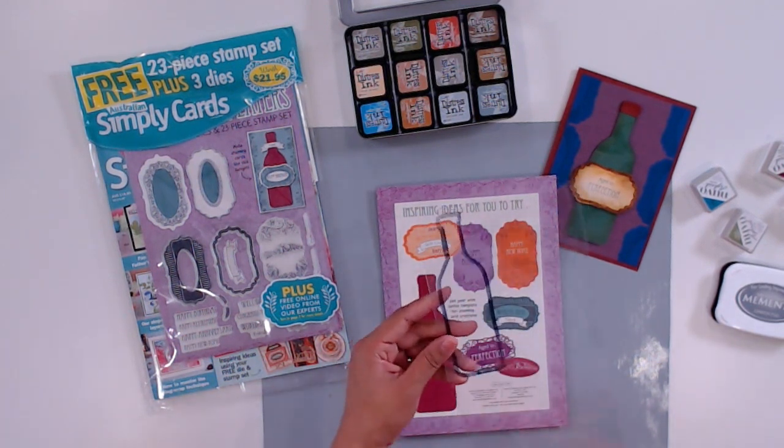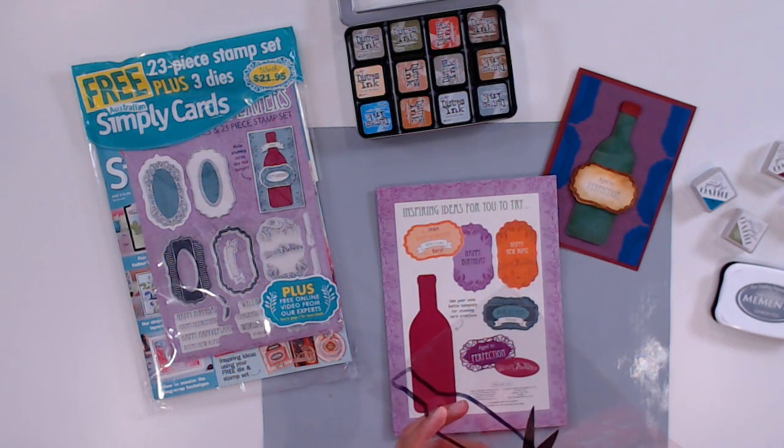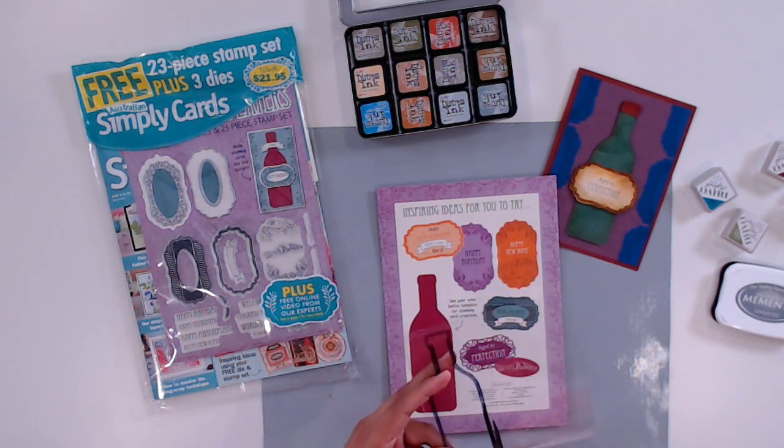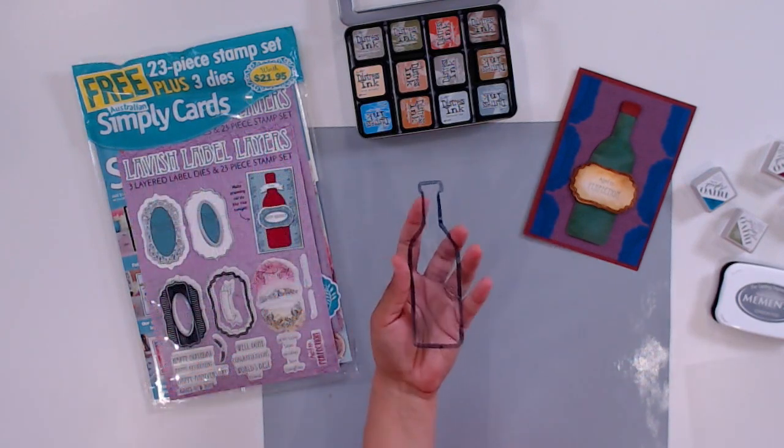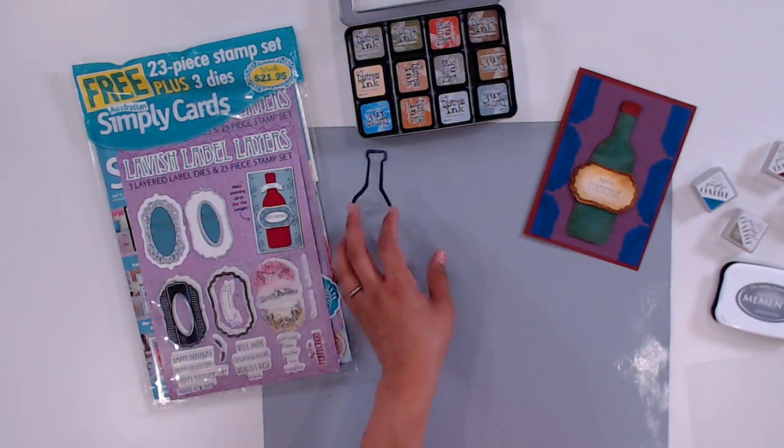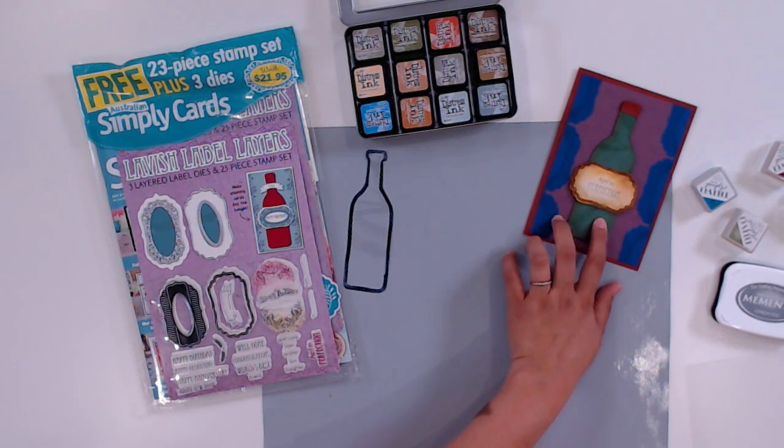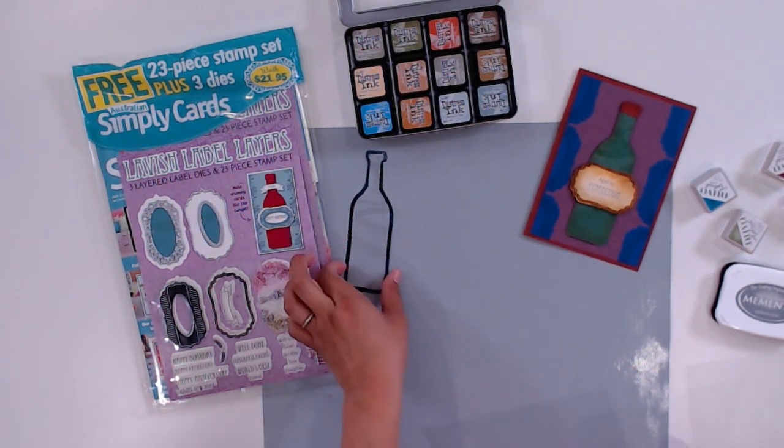Here's my template and now I'm going to cut this out with scissors. My wine bottle is done, so I'm going to set this aside and get to working on the vintage aged label.